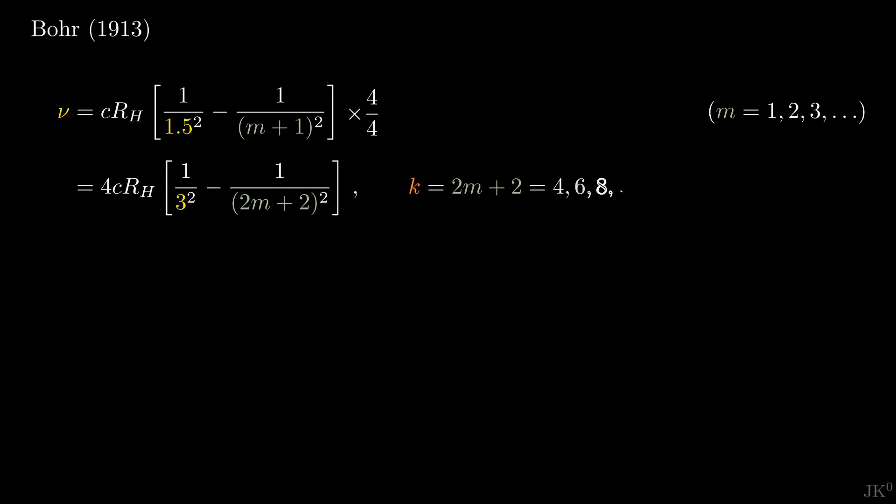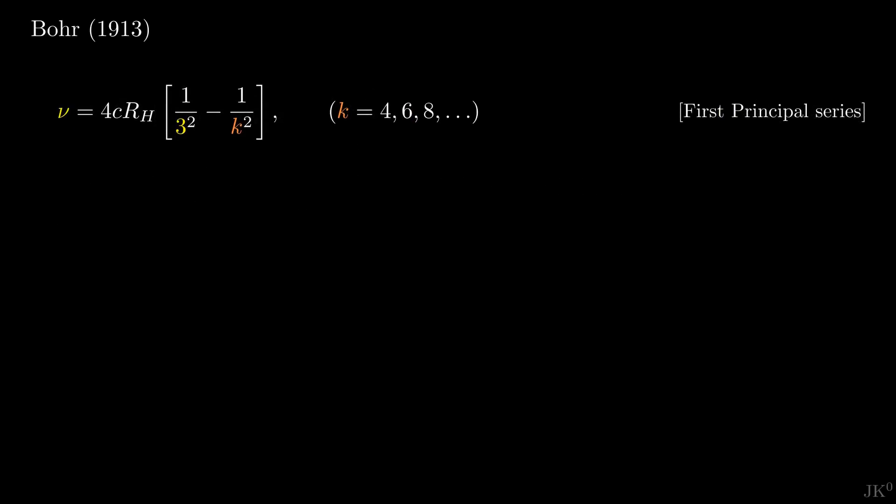Now we introduce a new index k equals 2m plus 2. Since m is a positive integer, k can only take even values equal or greater than 4. With this trick, we have rewritten the so-called first principle series in this way.